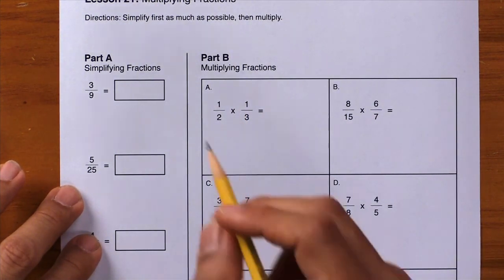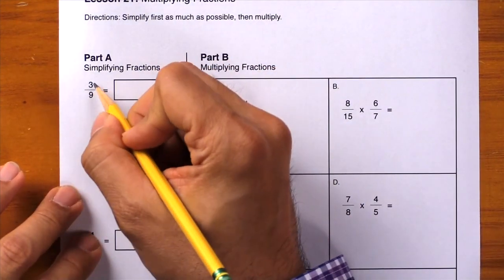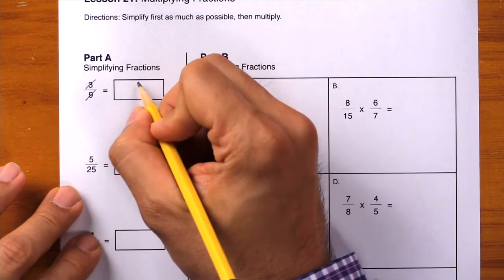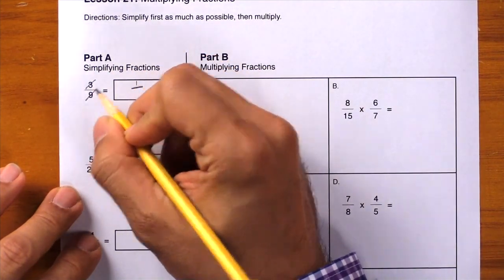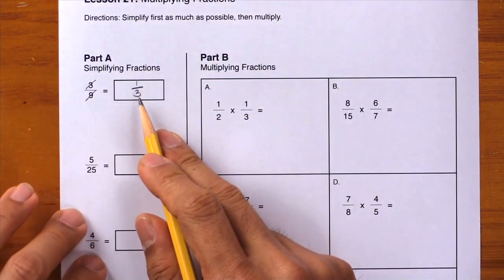Here in Part A, let's simplify 3/9. We can divide by 3 and divide by 3. 3 divided by 3 is 1, 9 divided by 3 is 3, and our answer is 1/3.